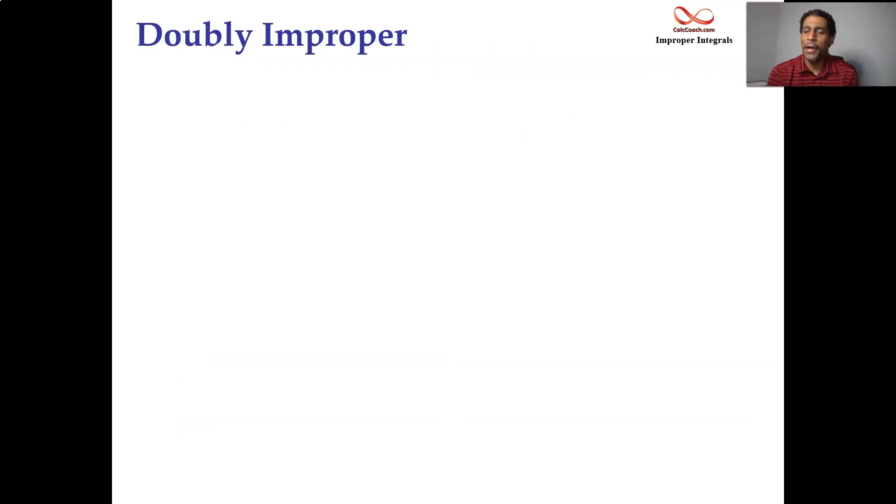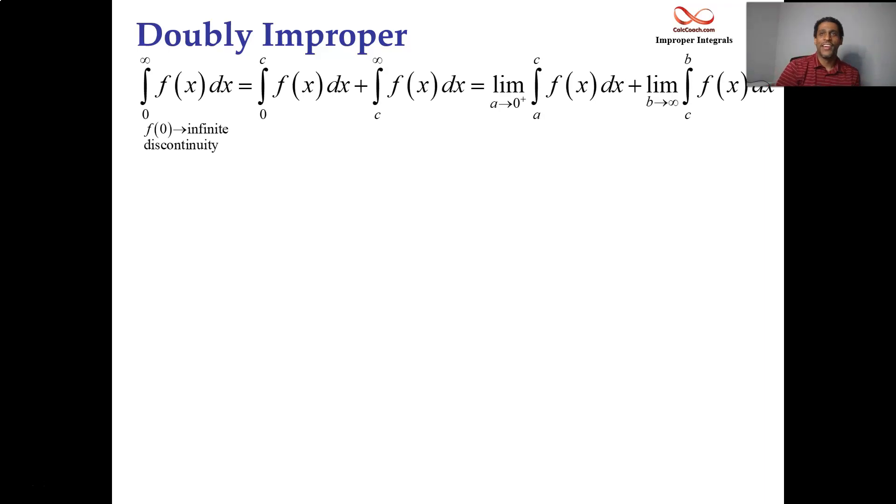Made-up word. Doubly improper. Improper for two reasons. As if one wasn't enough. Every example we've done so far was improper for only one reason. Now we're going to have improper for two reasons. An example that I'm going to go with is having a place where your lower limit is a discontinuity and your upper limit is infinite. And this one, much like the previous question, you're going to pick a place in between. Something easy to plug in other than the zero. Something like a one or a two. Something simple to plug in. And you're going to break it up into two integrals. Go from zero to two and then from two to infinity.